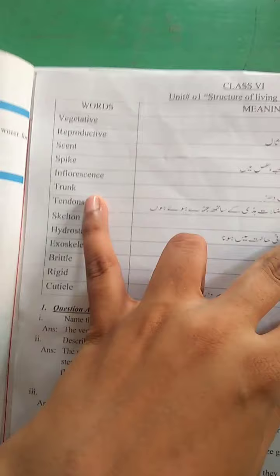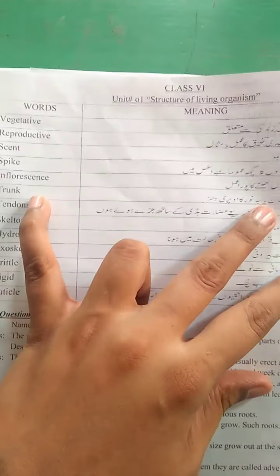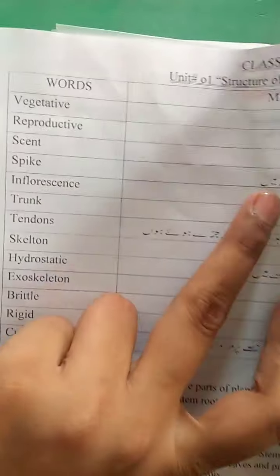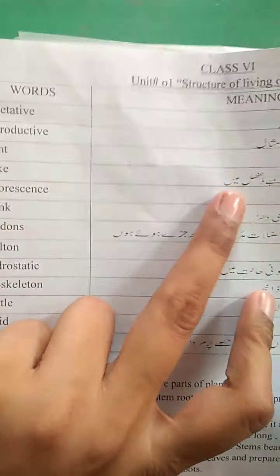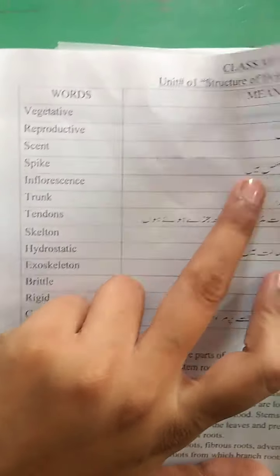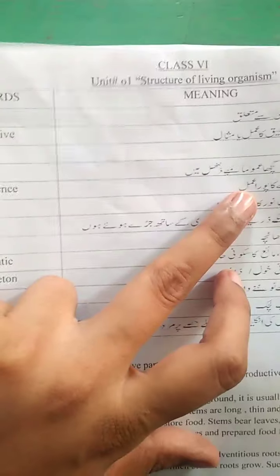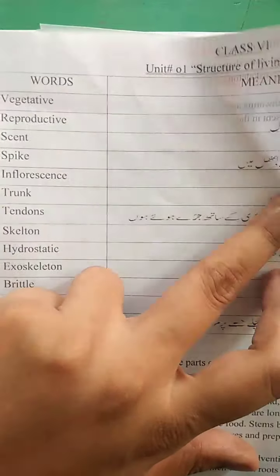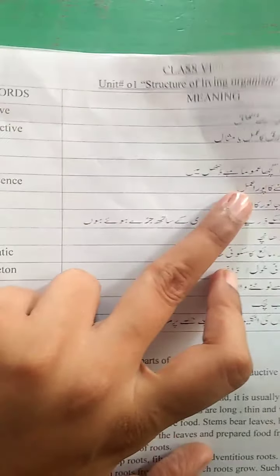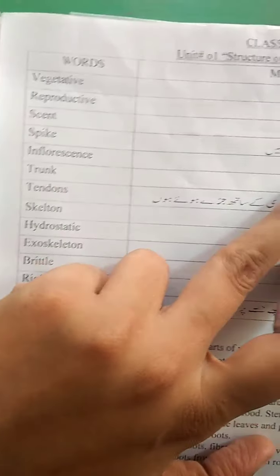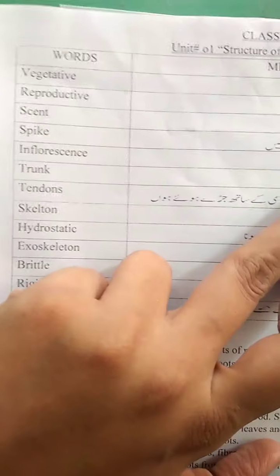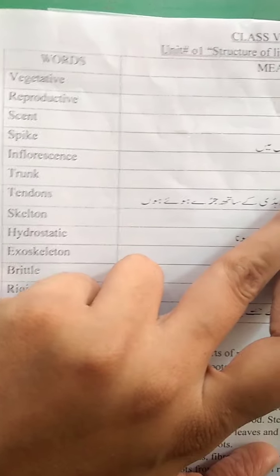Firstly, let's have a look at the words meaning. These are the words meaning which you will be doing in your copies. You will have to give the heading of first term, then chapter number 1, unit number 1 — Structure of Living Organism. First you will make these two title pages in your copies, then you will start the words meaning.